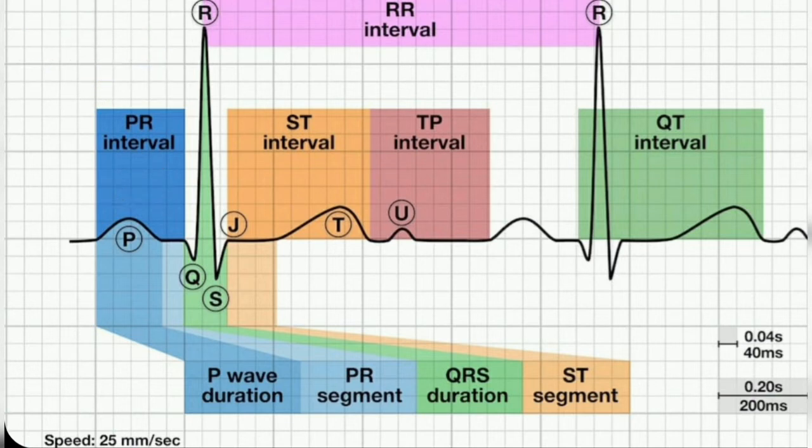Coming back to first degree heart block: if the PR interval is more than 200 milliseconds, meaning more than 5 small squares, then first degree heart block is said to be present. Simply put, first degree heart block is a prolonged PR interval.